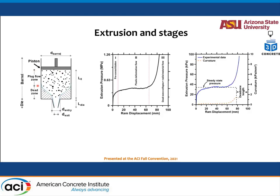We look at a simple ram extrusion case, using extrusion pressure versus displacement curves for both simulations and analytical models. You have a pre-consolidation state for a smaller ram displacement, then plastic deformation flow with almost no change in extrusion pressure, and then depending on the mix and extruder conditions, a rapidly increasing pressure region due to dead zones. By varying flow velocities, which we can simulate using the discrete element method, you can obtain different features of the material and the transformations it undergoes.